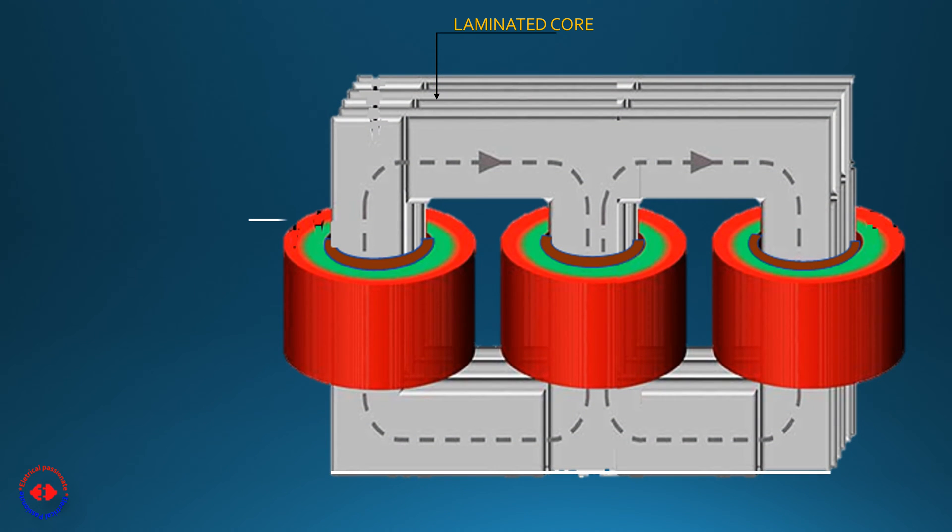For three-phase transformers, there are three windings which consist of LV and HV. LV winding is placed near to the core and HV winding wrapped on the outside of the LV winding.